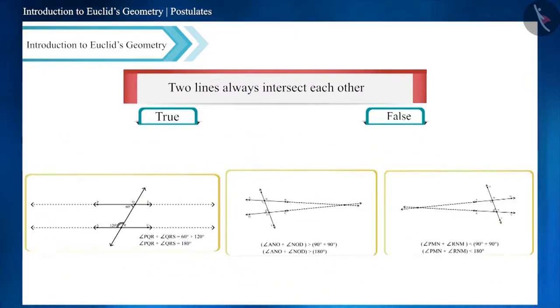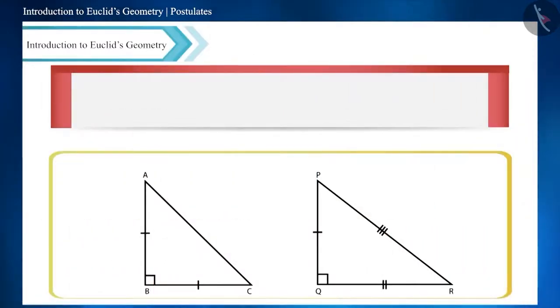Therefore this statement is false. If the right angle triangle ABC is also an isosceles triangle and the right angle triangle PQR is also a scalene triangle, then angle ABC will be equal to angle PQR.